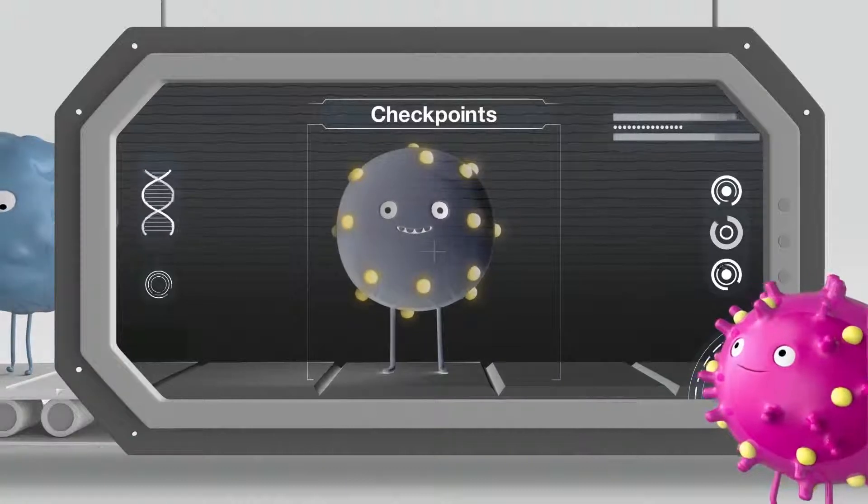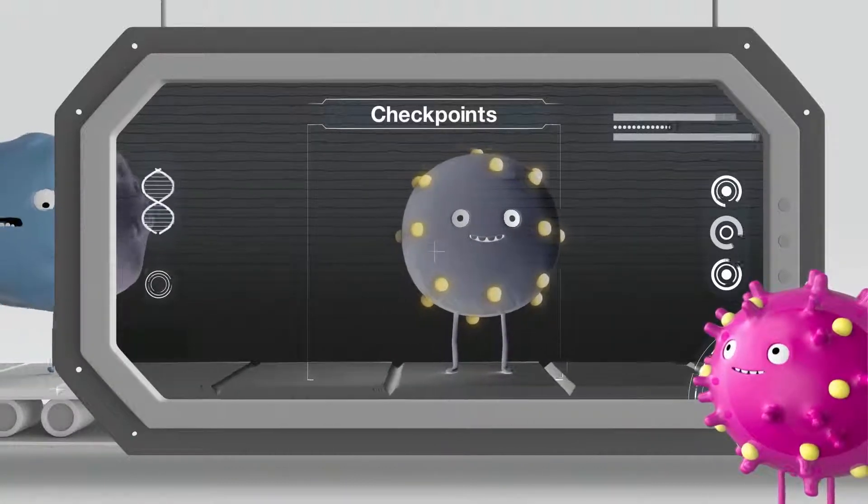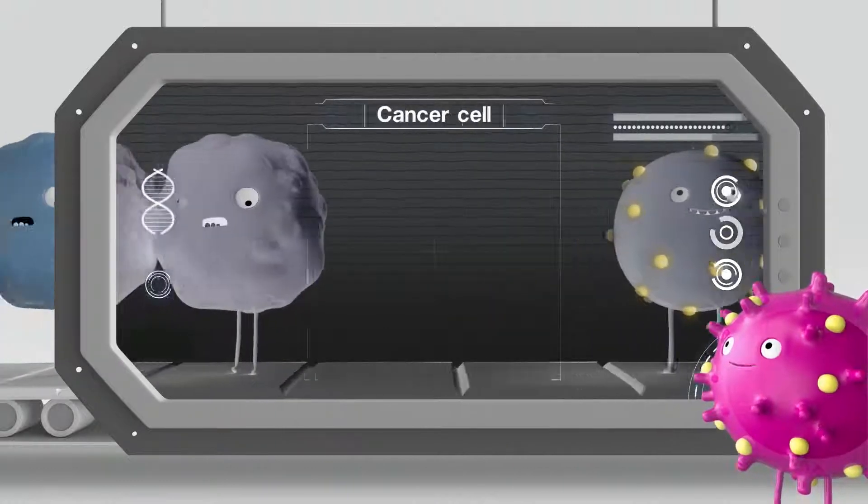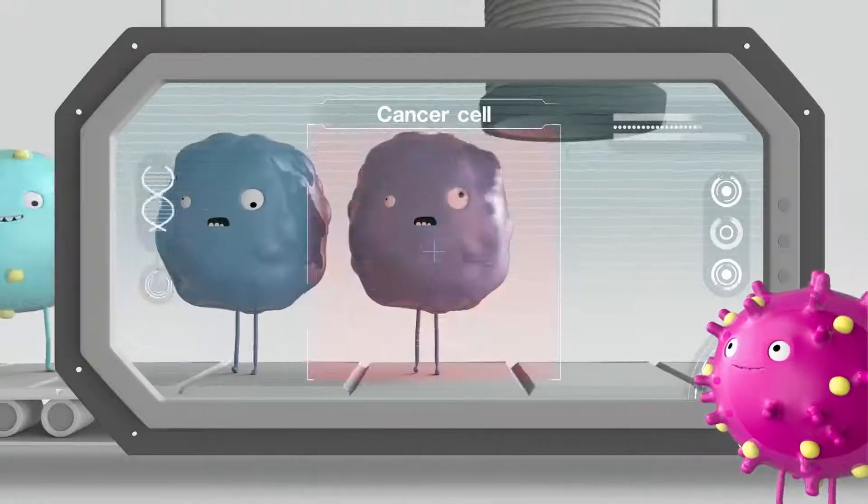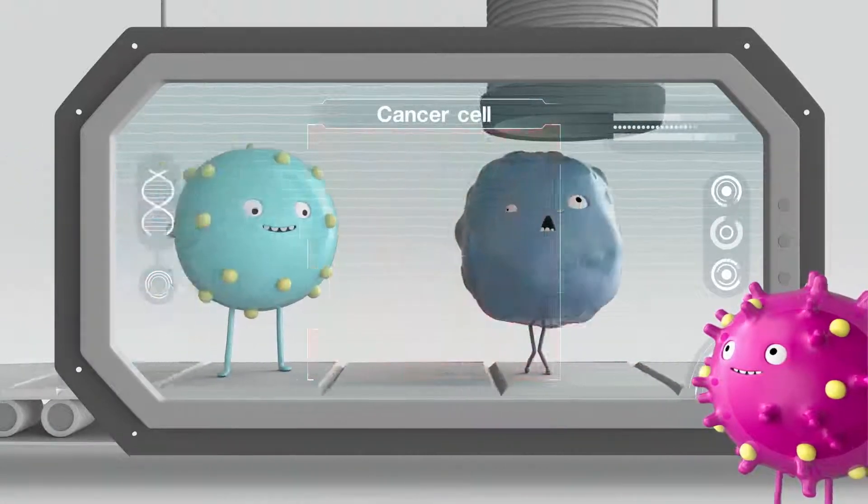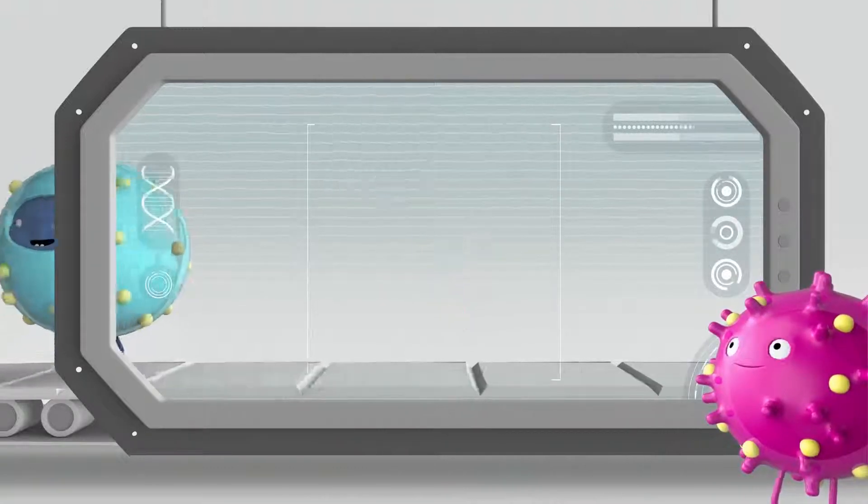Checkpoints can help your immune system tell which cells are good, your healthy body cells, and which ones are bad, like cancer cells. They also ensure that the immune system's response isn't too strong. Otherwise, your healthy cells could get damaged by mistake.